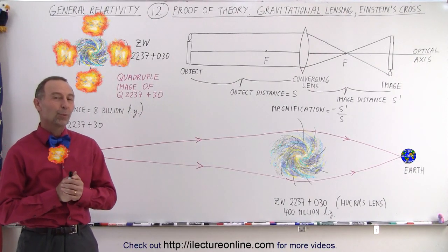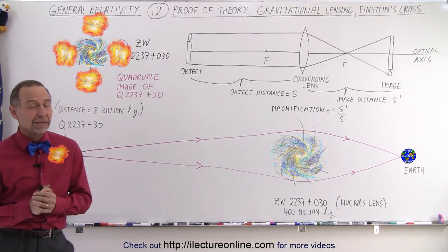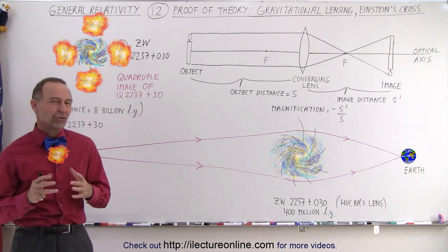Welcome to Electronline. One of the most dramatic results of the general theory of relativity is what we call gravitational lensing.